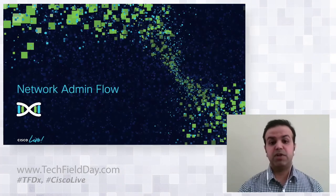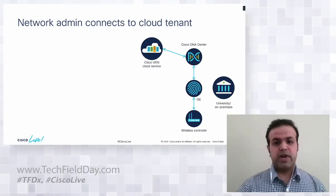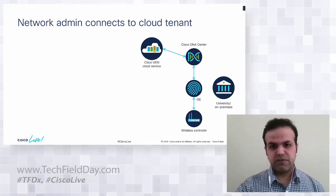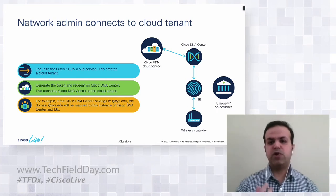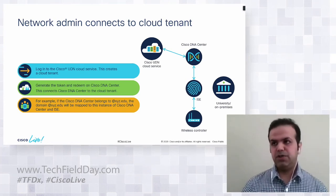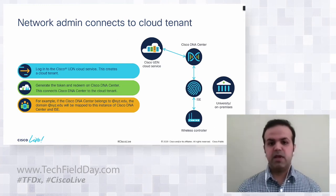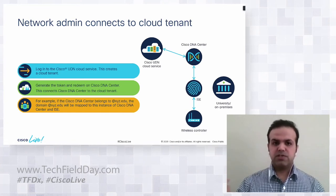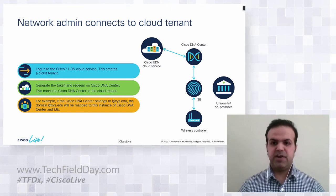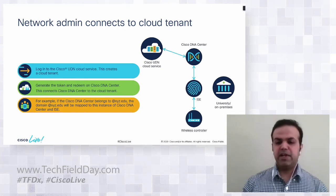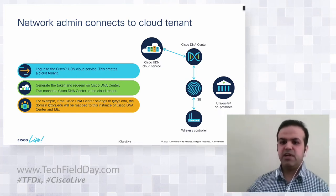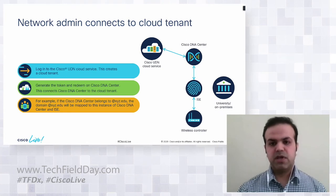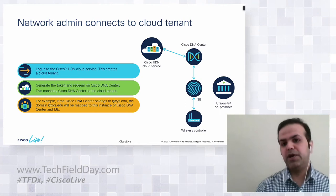The network admin can go to the UDN Cloud Service. When the admin goes there, it creates a cloud tenant for them. For example, with a school credential like pu@sysco.edu, when a student logs into the mobile app, the UDN Cloud Service — because the admin connected it to the on-prem DNA Center and ISE — automatically identifies the domain name and determines which exactly DNA Center and ISE instance to match to.